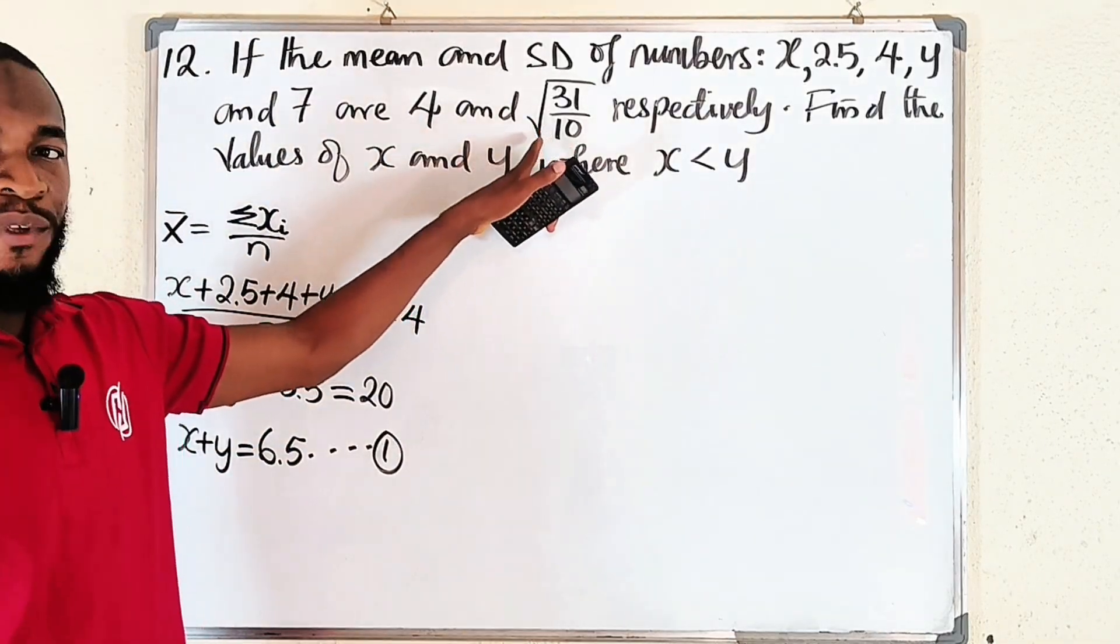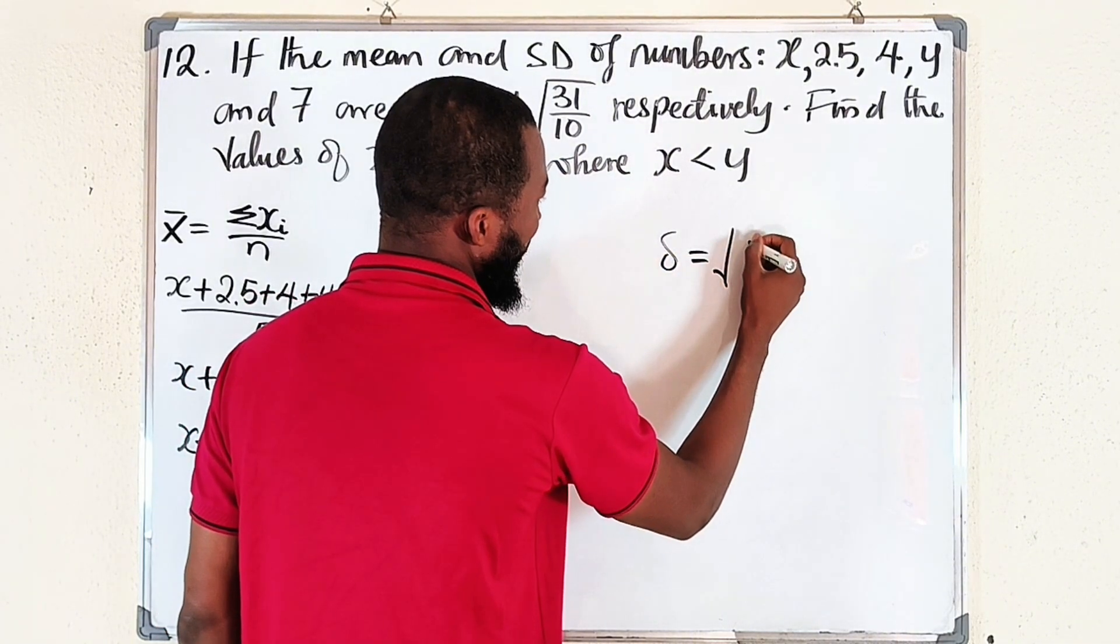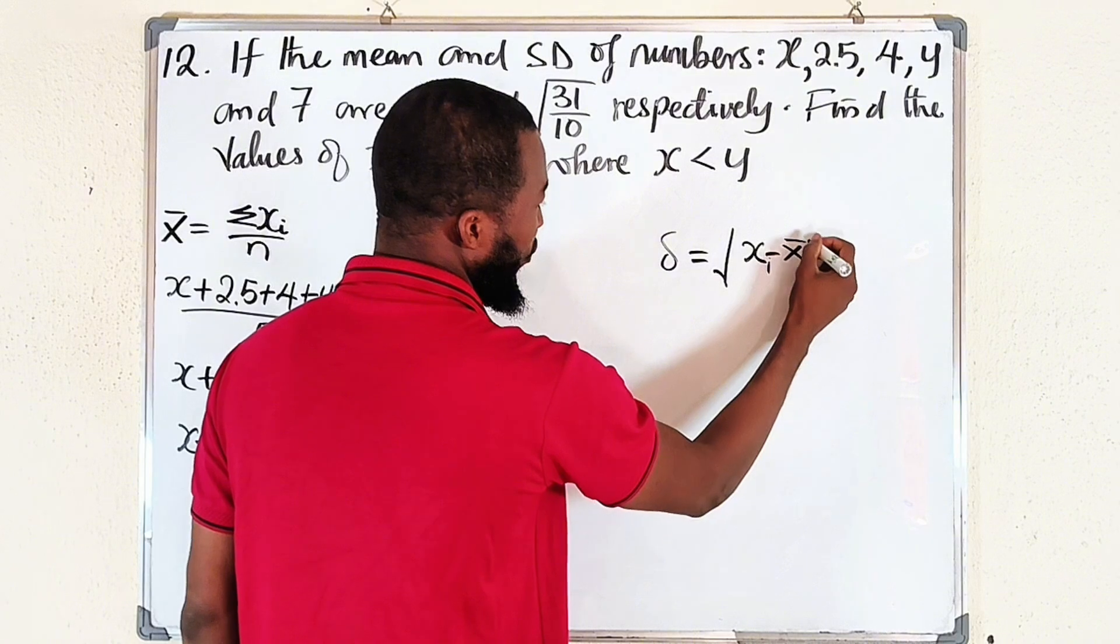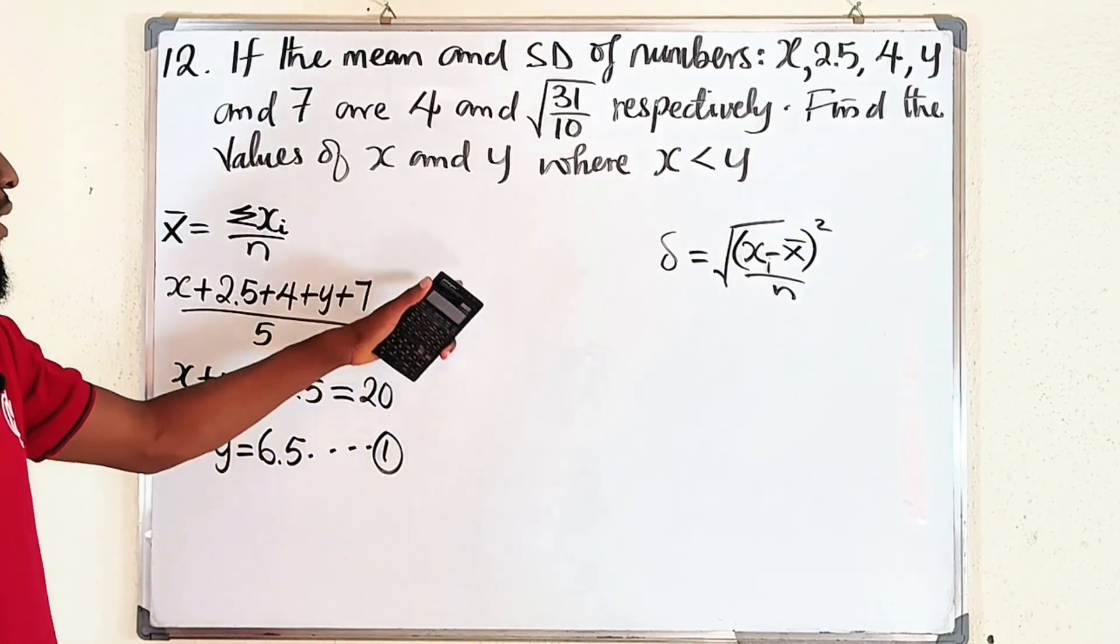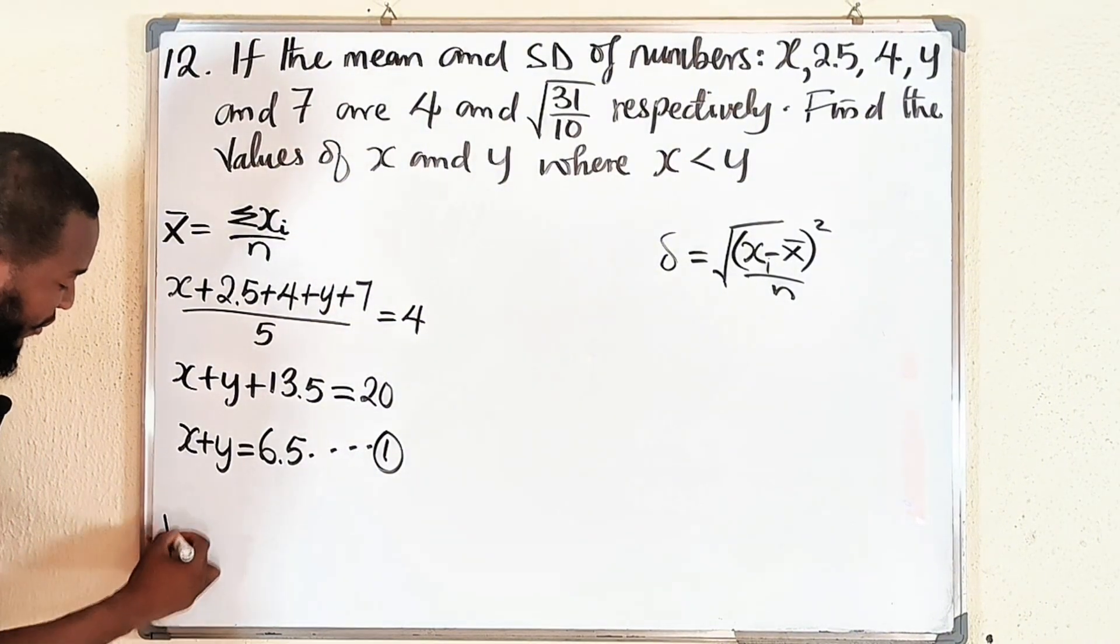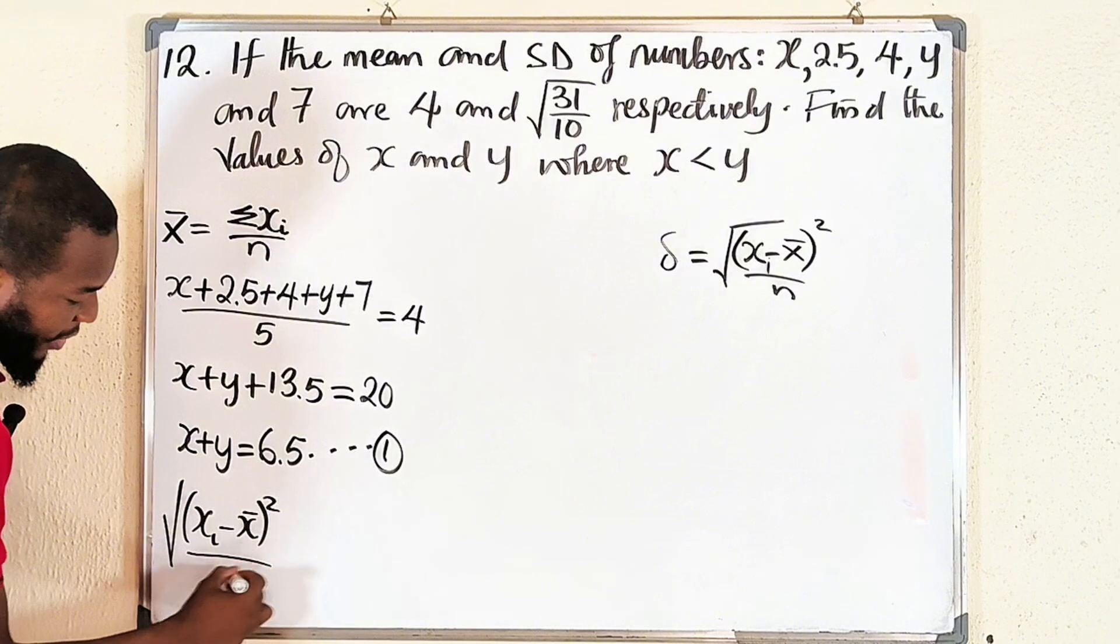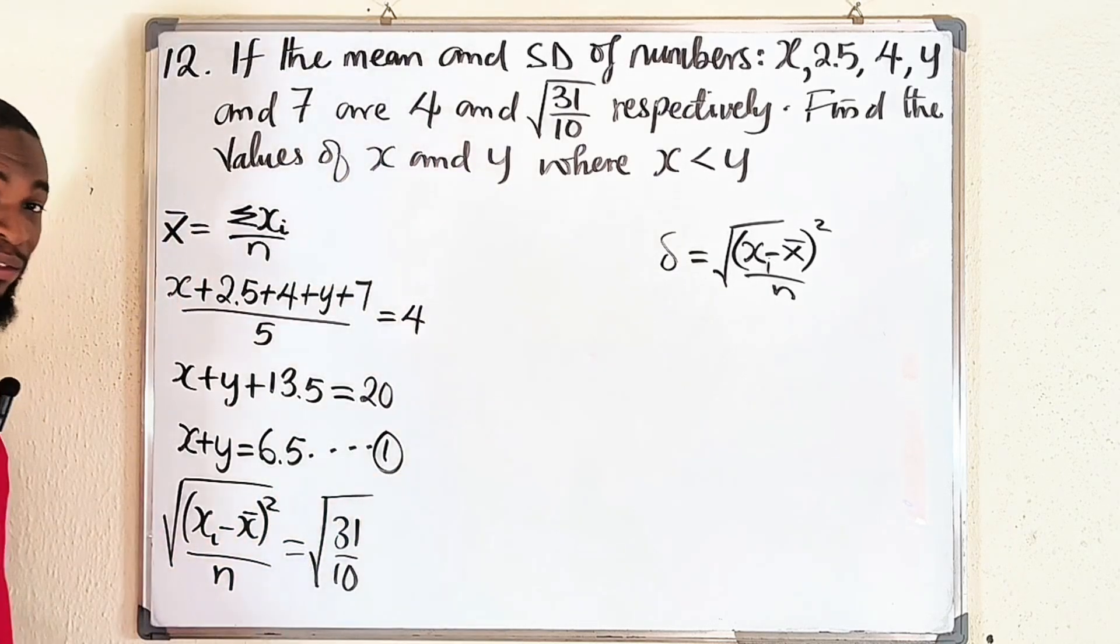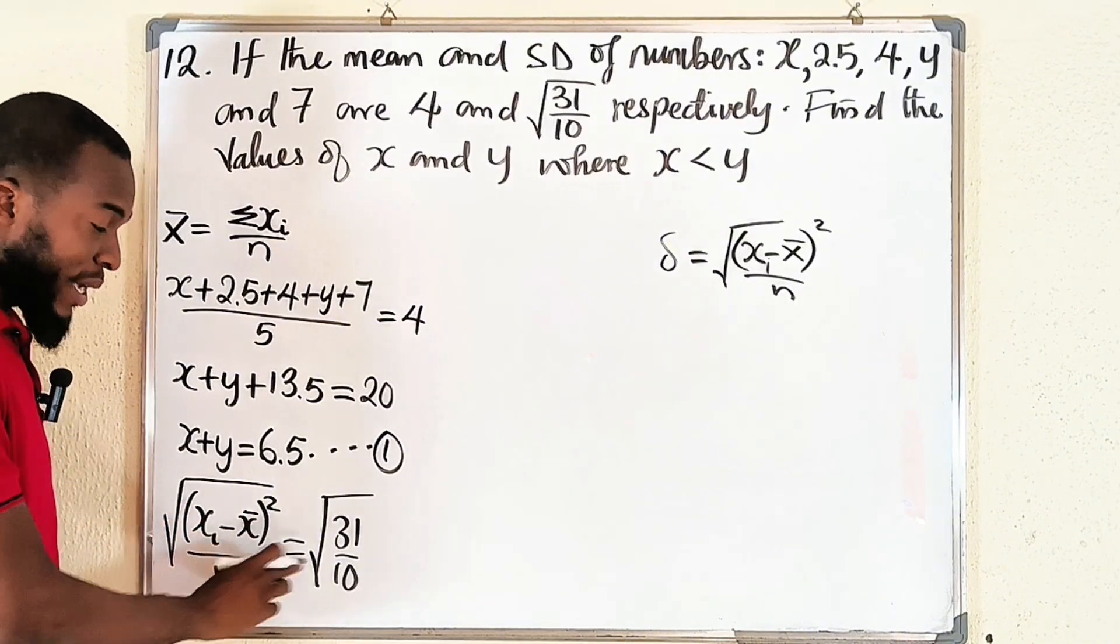Now, this is the standard deviation. The formula for standard deviation is given by delta equal to the square root of the summation of (x_i minus x bar) squared divided by n. This is the formula we are going to use. It is equal to this, right? The square root of (x_i minus x bar) squared divided by n. According to the question, this is equal to the square root of 31 divided by 10. Eventually, you can square both sides, so you have (x_i minus x bar) squared divided by n equal to 31 divided by 10.